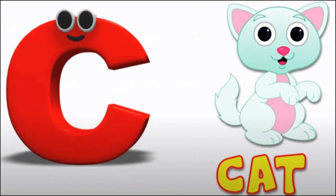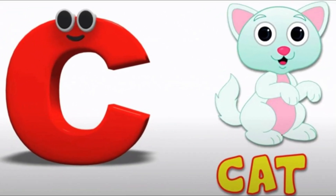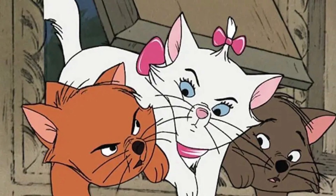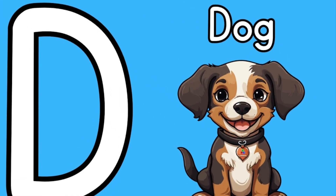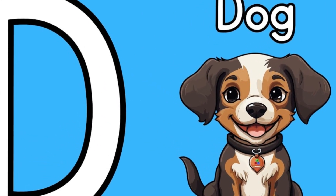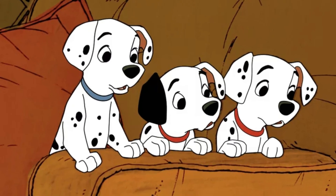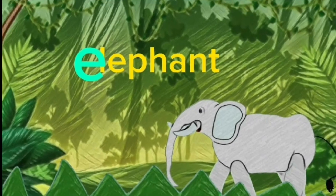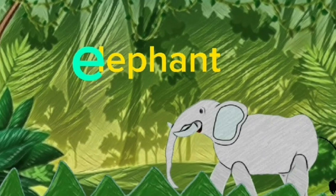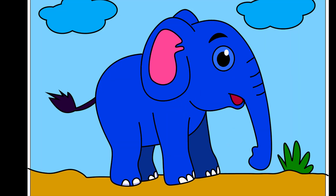C is for cat, cat means billi. D is for dog, dog means kutta.